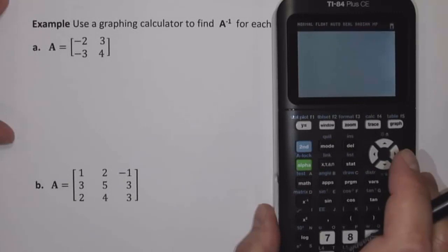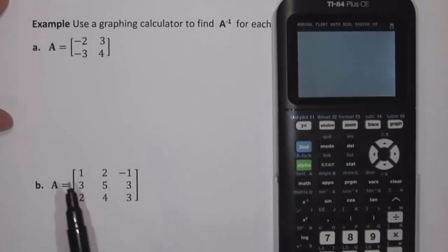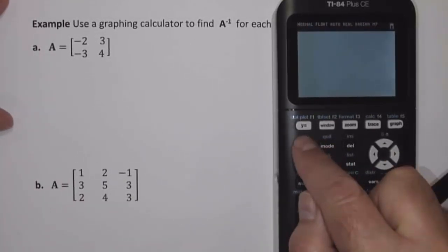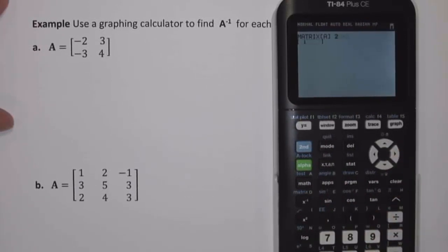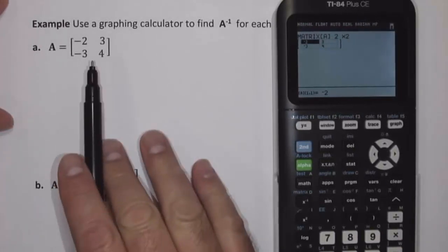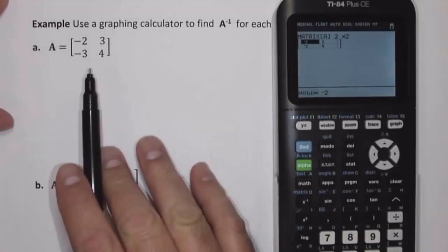So we're going to begin by entering our matrix into the calculator. So I'm going to go to 2nd and Matrix, Edit, Matrix A. It's a 2x2 matrix, and I'm going to put in the entries negative 2, 3, negative 3, 4. So I have our 2x2 matrix entered into the calculator.